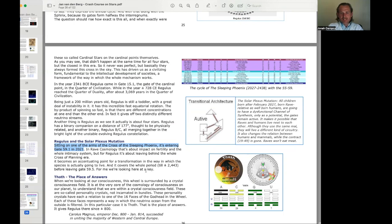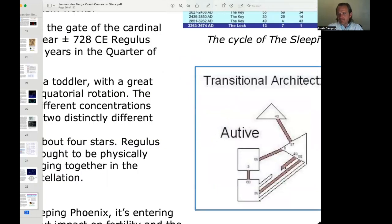It becomes an accentuating point for a transformation in the way in which the species is actually going to live. And it covers the whole period until around 2443 before leaving Gate 59. All children born after February 2027, born Rave, as well-born humans, are going to have a dysfunctional channel of synthesis. Only as a potential, the gates remain active. It makes it possible that raves and humans live next to each other. While the contract, 1949, is gone. Raves won't eat meat. This is referring to the break that's happening.